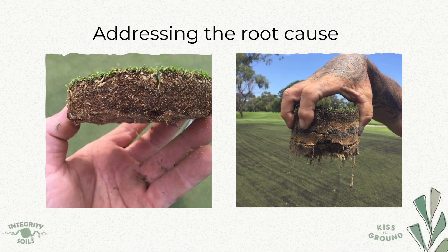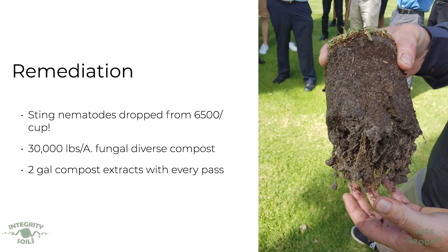The photo on the right hand side is what these soils look like after a year of compost applications. You can already see that those roots are able to get down deep, we're seeing a mixing through that profile, and getting on top of those nematodes. They applied thirty thousand pounds an acre of a fungal diverse compost, and then with every pass they were adding a compost extract.